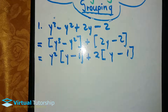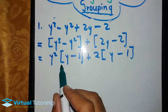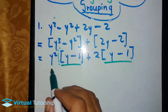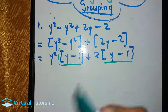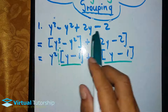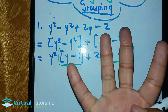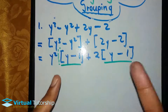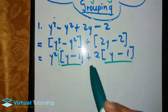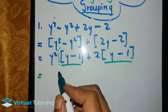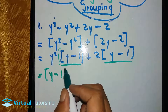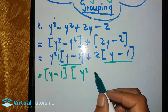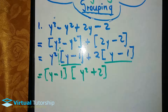So, just by grouping and taking out y squared and 2 as common factors, you can see that y minus 1 is the common factor again. Remember, this whole bracketed expression is one term, and the other bracket is also a term. So y minus 1 is the common factor of both terms.